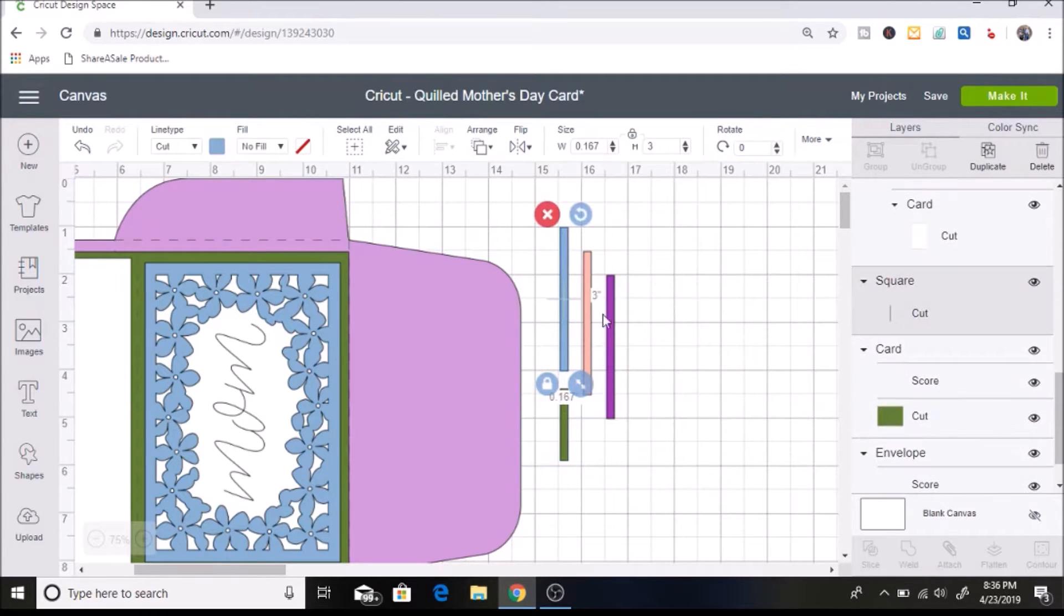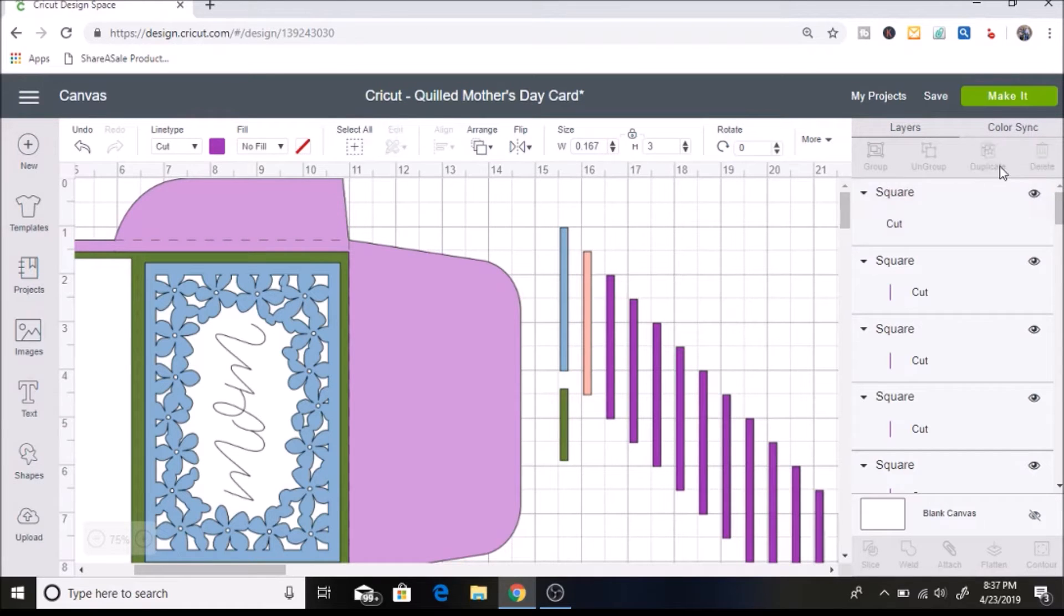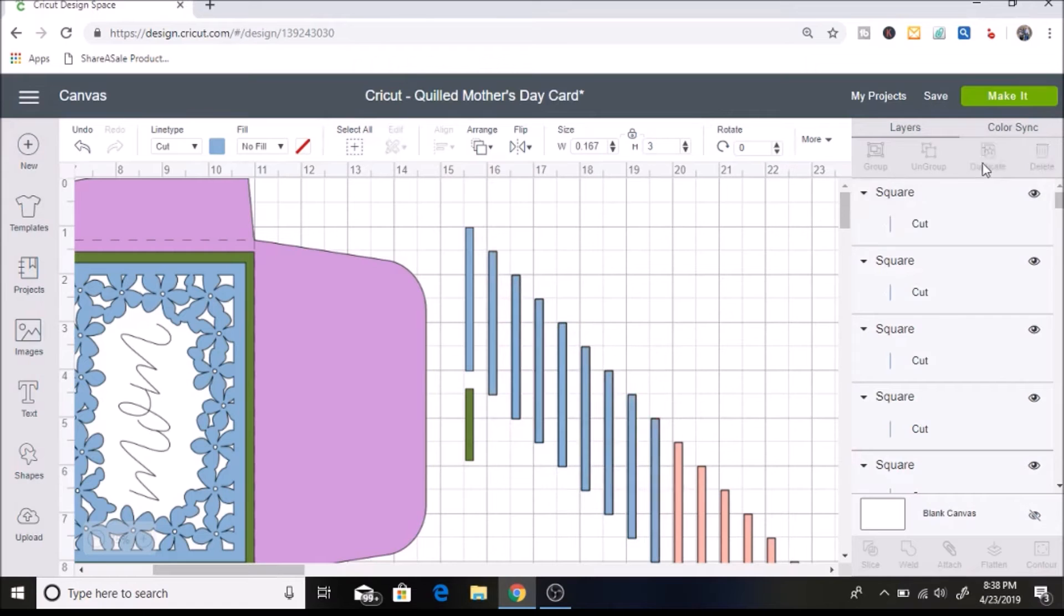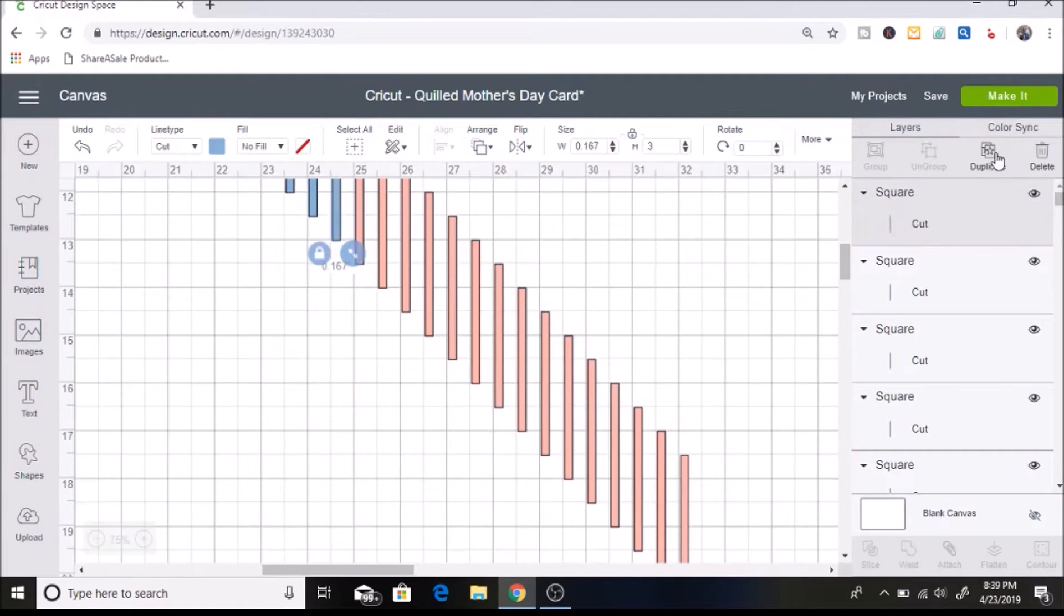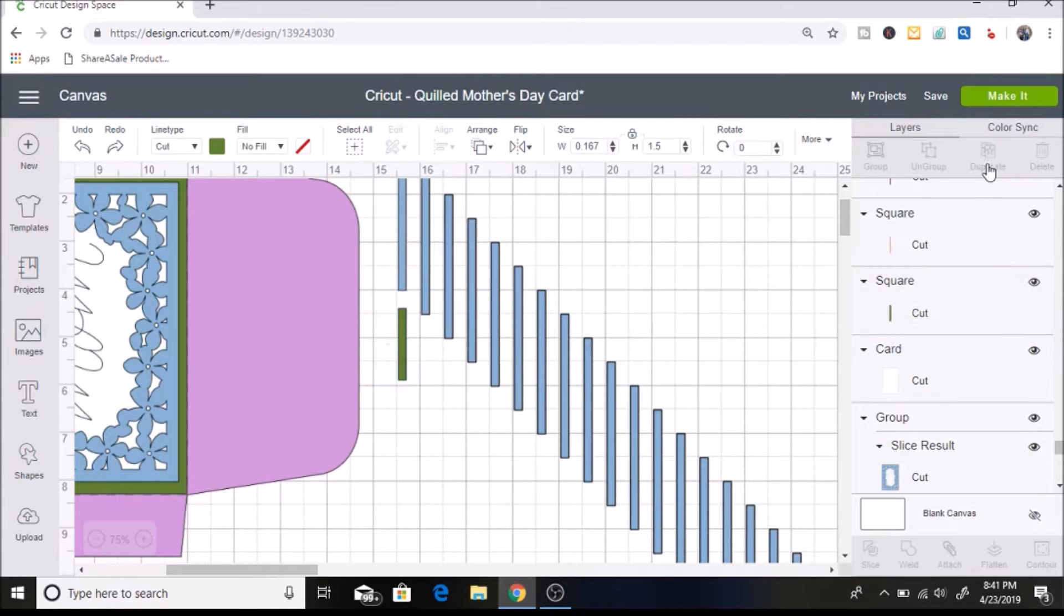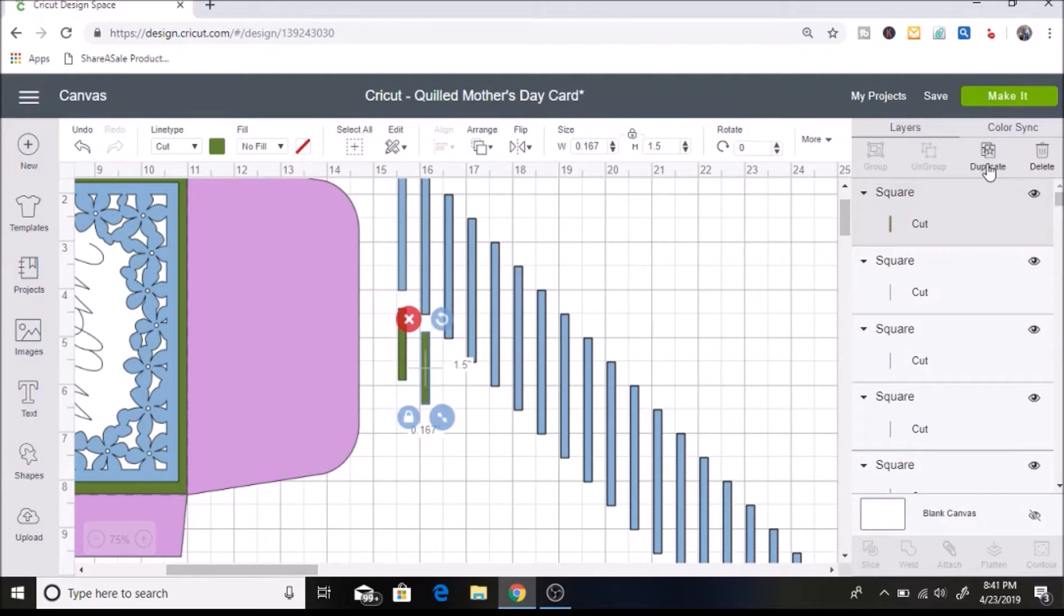And then this green part is our leaf. So I'm going to duplicate these so I have 30 of each petal. So I'm just going to duplicate all of those now. And then for the leaf we need 17 of these so I'm going to duplicate that 16 times. And if there is an easier way to do this let me know. I have not really looked into that if there's a faster way to do this.